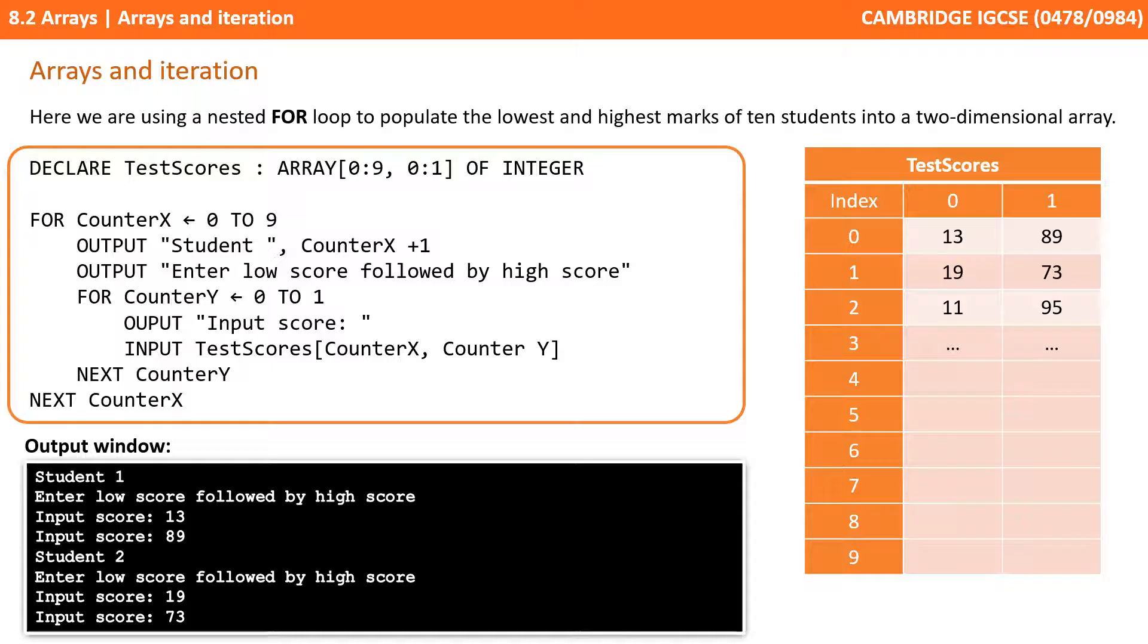Moving on to two-dimensional arrays, we're now going to be using a nested for loop, and this is something you need to be able to do in the exam. Whenever you've got a two-dimensional array, you'll require a nested for loop if you wish to travel through every single element in the most efficient way possible. In this situation we're going to be populating the lowest and highest marks of 10 students. We'll have the students down the left with index 0 to 9, the first column will have the low score, and the second column will have their high score.